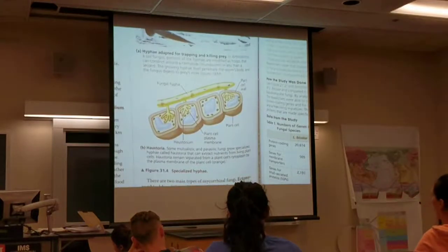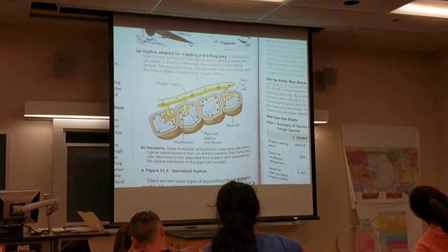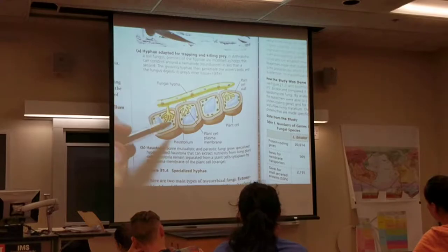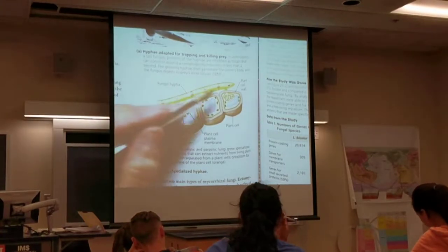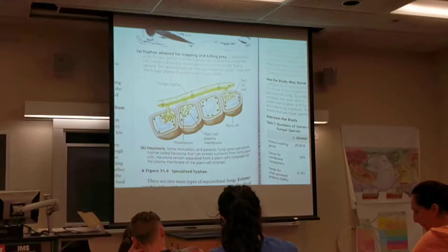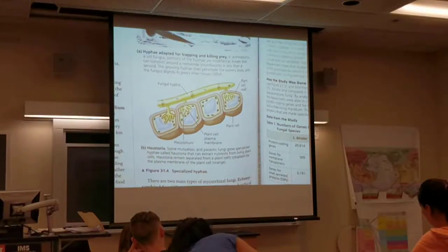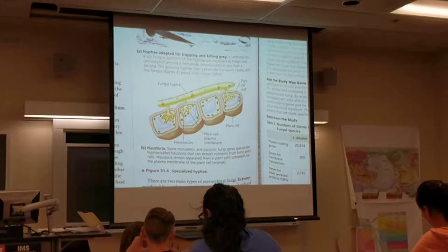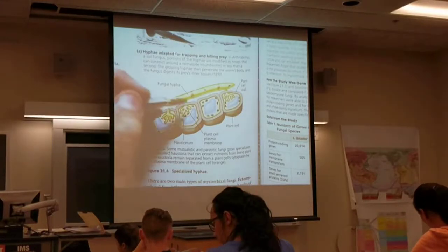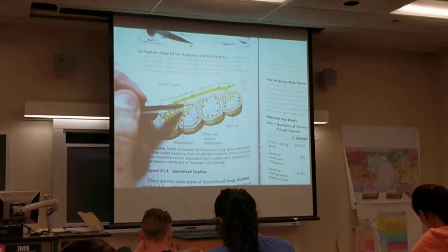Another aspect of their structure is the haustorium, which forms from a single hypha. It penetrates into its host cells — it might be a plant, it might be an animal. In other words, these fungi are oftentimes parasites, but as we'll learn, not always.